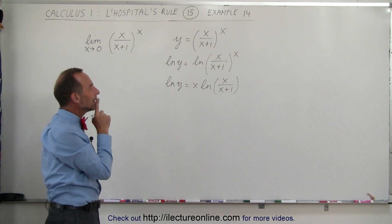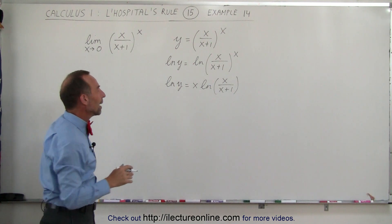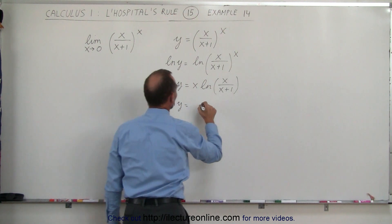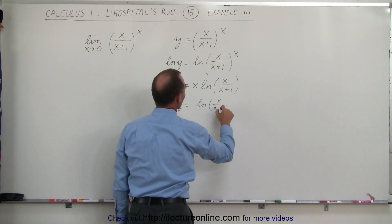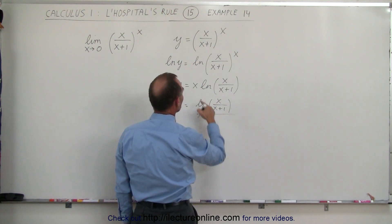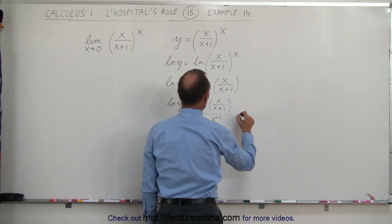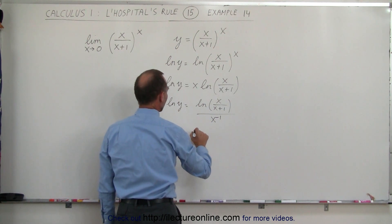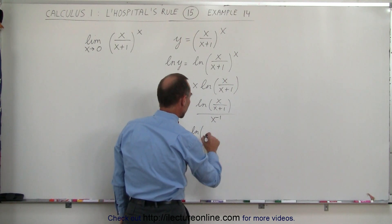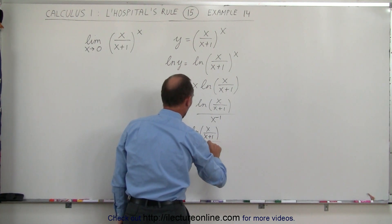Now what we can do is go ahead and rewrite it into a fractional format. The natural log of y is equal to the natural log of x divided by x plus 1, all divided by x to the minus 1 — or equivalently, divided by 1 over x.